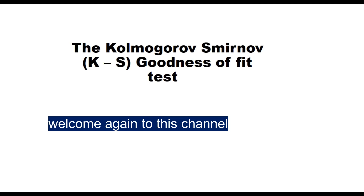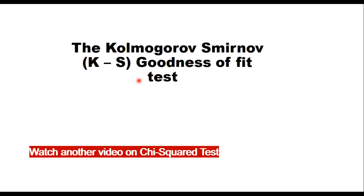Hello friends. Today in this session we will discuss the Kolmogorov-Smirnov goodness of fit test, which is commonly known as the KS test. There are three tests that can be used to determine the goodness of fit between observed data and estimated data: the chi-square test, KS test, and the Anderson-Darling (AD) test. The chi-square test I have already discussed in another video. Today we will discuss the KS test.